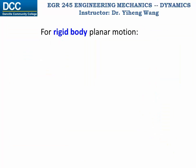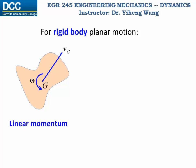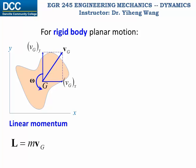For a rigid body undergoing planar motion, its gravitational center point G has linear velocity vG and the rigid body has angular velocity omega. Its linear momentum is defined as the mass multiplied by the linear velocity vG of its gravitational center. Setting the rigid body into the x-y coordinate system, the linear velocity vG can be resolved into x and y components, so the linear momentum vector L can also be resolved into two scalars: linear momentum along x and linear momentum along y.